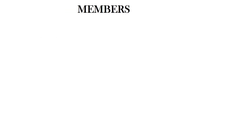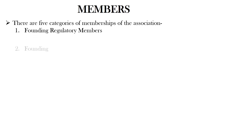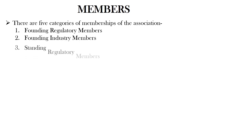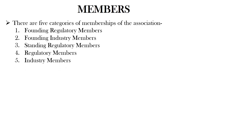There are five categories of memberships of the ICH association. These are founding regulatory member, founding industry member, standing regulatory member, regulatory member, and industry member.